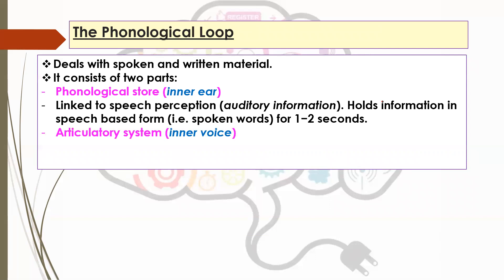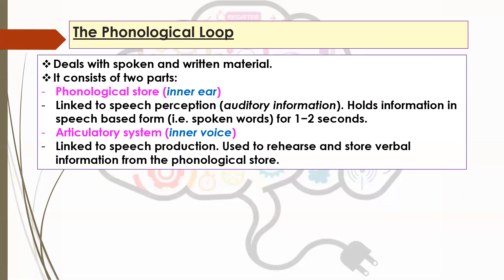You've also got the articulatory system, known as the inner voice. The inner voice is linked to speech production and is used to rehearse and store verbal information from the phonological store. So when you first hear something and then repeat it — for instance, if you meet someone new and they tell you their name, you might say it again a few times in your head — that process is the inner voice. You do the same thing when trying to learn a phone number, organising it into smaller chunks and repeating it in your head.